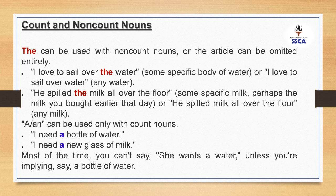First, we will talk about count and non-count nouns and how we use 'the' with them. 'The' can be used with non-count nouns, or the article can be omitted entirely. For example, 'I love to sail over the water' — some specific body of water — or 'I love to sail over water' — any water. If you are talking about specific water, we use 'the', but if talking about water in general, we omit it. 'He spilled the milk all over the floor' — here it refers to a specific milk, perhaps milk bought earlier that day.